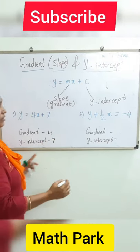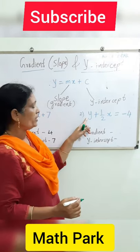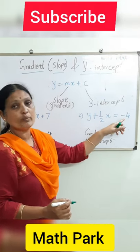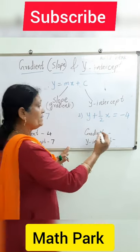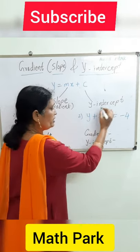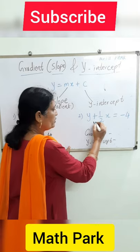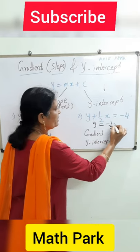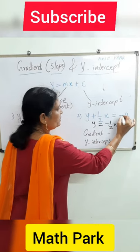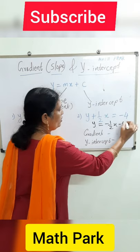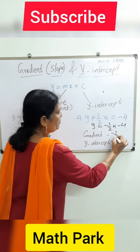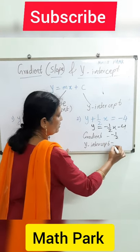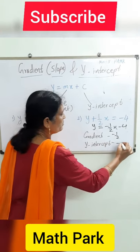Now here the equation is y plus half x is equal to minus 4. We make y the subject by shifting half x to the other side, so y is equal to minus half x minus 4. So your gradient is minus half, which is the coefficient of x, and your y-intercept is minus 4.